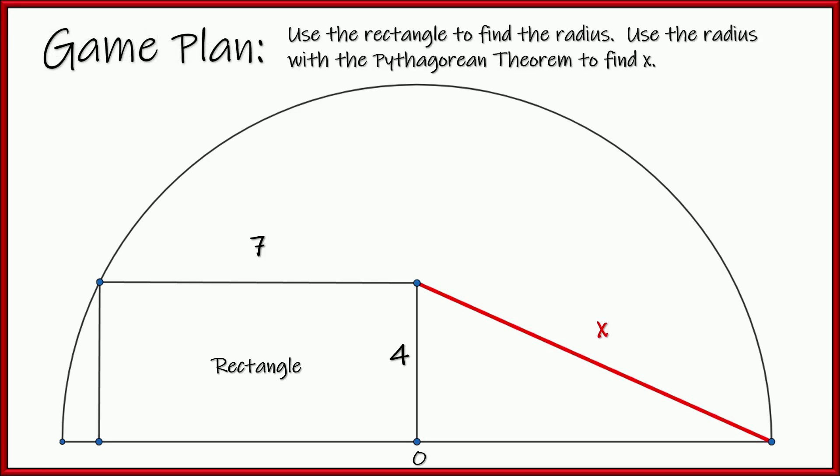Here's my game plan. What I'm going to do is I'm going to use this rectangle over here and find the diagonal, which also happens to be the radius. And the radius would also be from here to here. And once I know that,